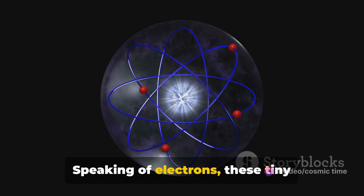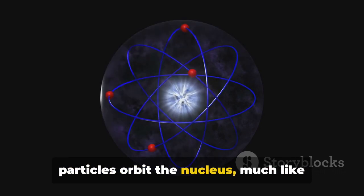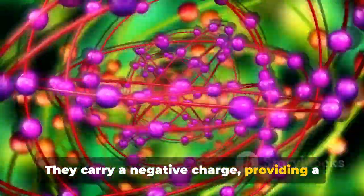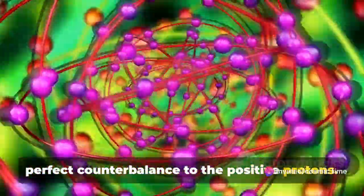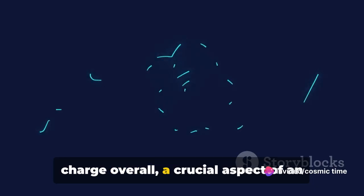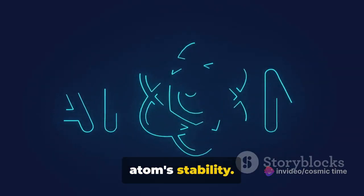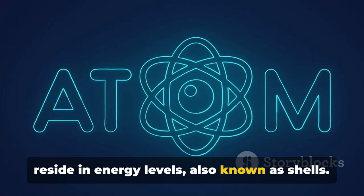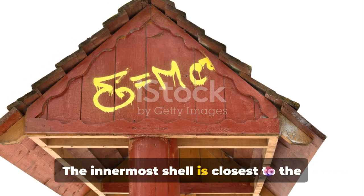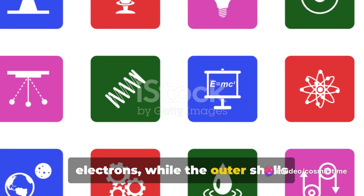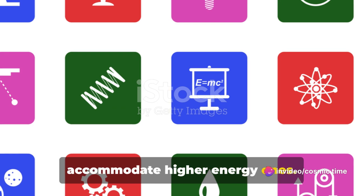Speaking of electrons, these tiny particles orbit the nucleus much like planets around a sun. They carry a negative charge, providing a perfect counterbalance to the positive protons. This delicate balance creates a neutral charge overall, a crucial aspect of an atom's stability. In the grand atomic city, electrons reside in energy levels, also known as shells. The innermost shell is closest to the nucleus, housing the lowest energy electrons, while the outer shells accommodate higher energy ones.